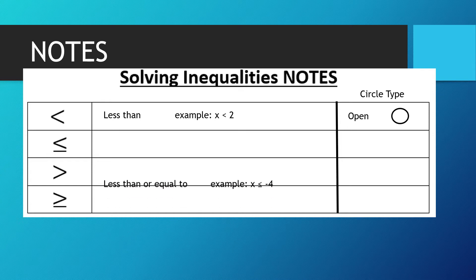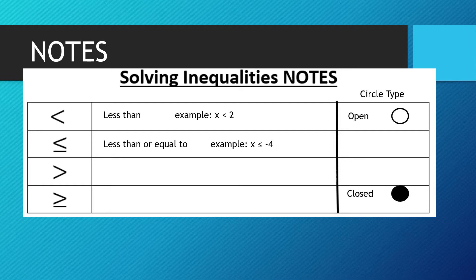The next symbol is less than or equal to. An example is x is less than or equal to negative 4. So any number less than negative 4 on the number line, but this time it can equal negative 4. When we graph that, we put a closed circle on the graph.